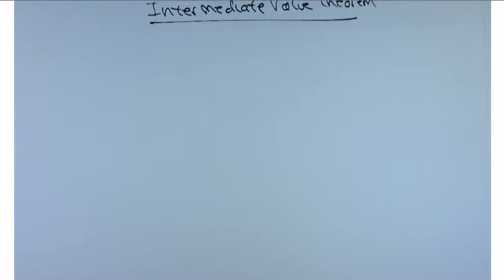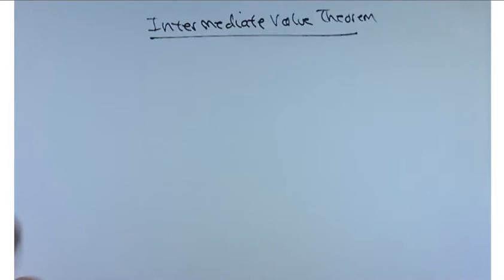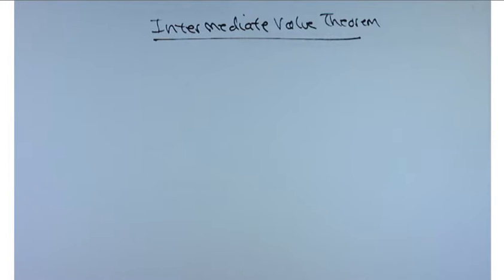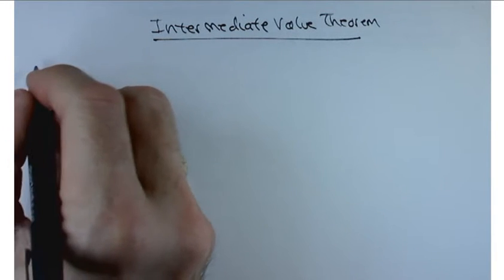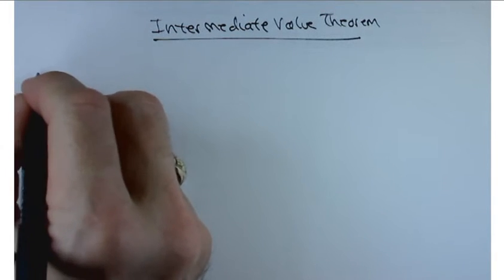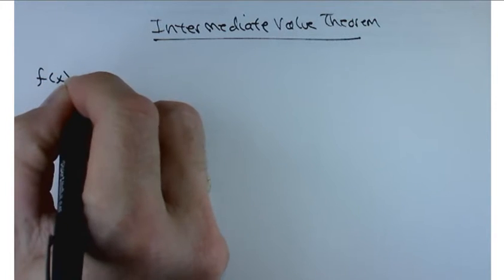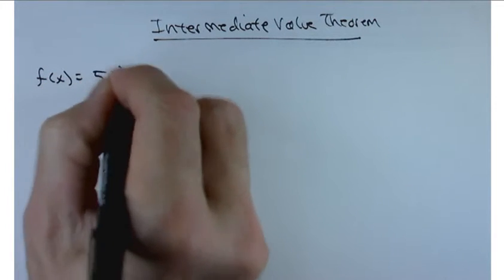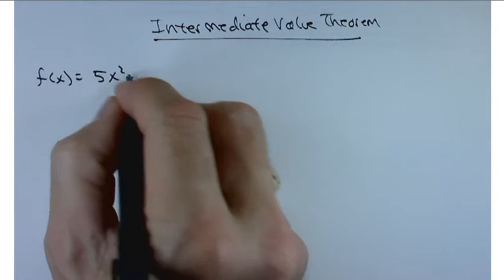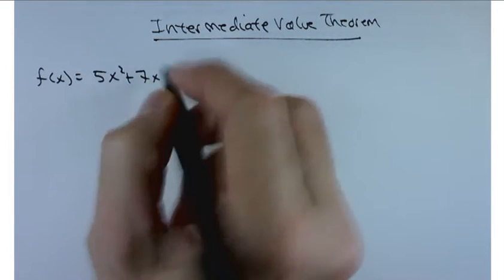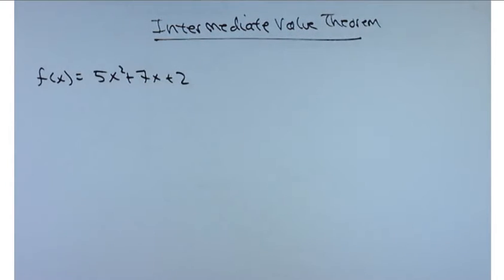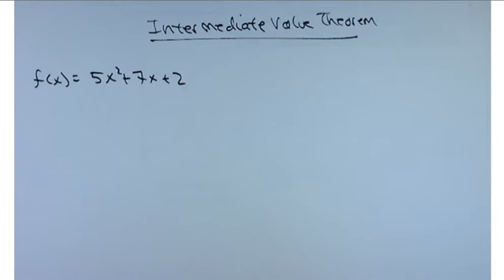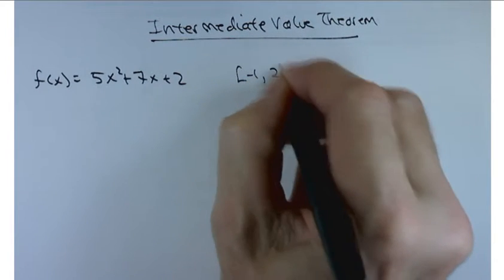So we're going to discuss the intermediate value theorem. And to do that, let me look at a particular example of function f of x equals 5x squared plus 7x plus 2. And I'm going to examine this on the interval, say, negative 1 to 2.